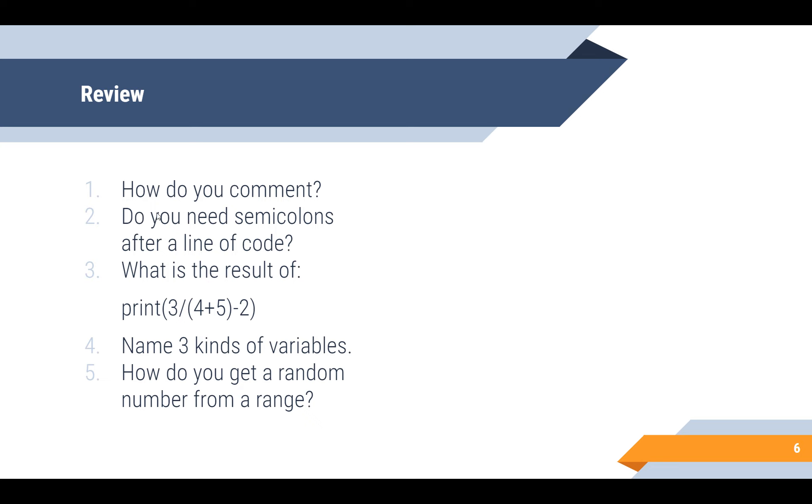So number one, how would you comment? Number two, do you need semicolons after any line of code? Three, what is the result of print three divided by parentheses by the sum of four plus five minus two? Name three kinds of variables, the main ones we learned about, and how would you get a random number from a range? So these are questions from all throughout our lessons. So if you don't know any of them, you can go back to that lesson. So this we just learned. This is lesson probably two. This is lesson three, four, and five.